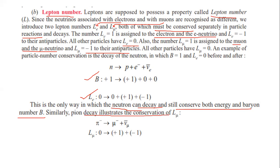Similarly, pion decay illustrates the conservation of L_mu. Pi-minus decays to mu-minus plus antineutrino of mu. The muon number L_mu is 0 on the left side; on the right side, mu-minus gives plus 1 and antineutrino of mu gives minus 1. So L_mu is conserved, and this reaction is possible. This illustrates the conservation of lepton number.